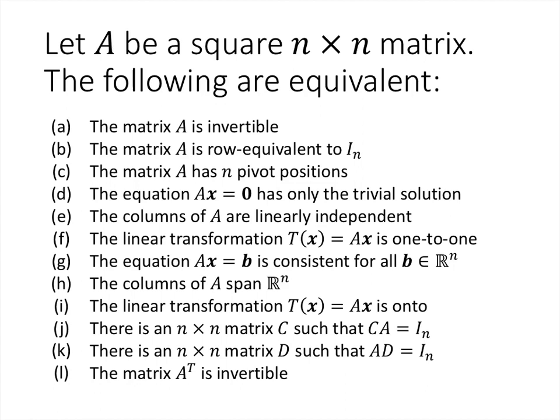Here's the statement of the theorem. It says if we have an n by n matrix, then all of the following statements are equivalent. We have 12 statements listed here, and what the theorem says is that all 12 of these statements are true about a particular matrix or all 12 are false. So if any one of these statements is true, then all of the rest are true. And if any one is false, then all of the other 11 are also false.